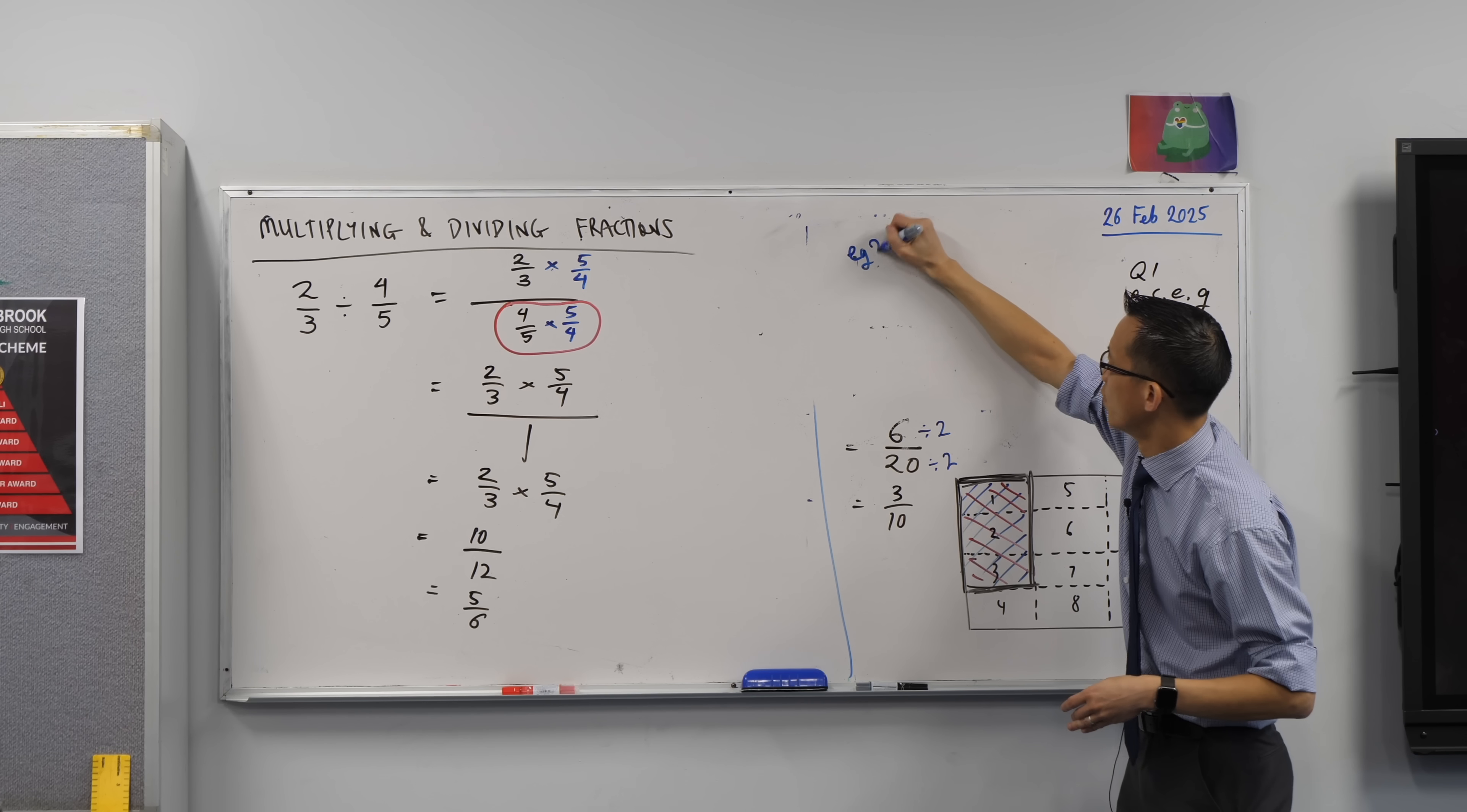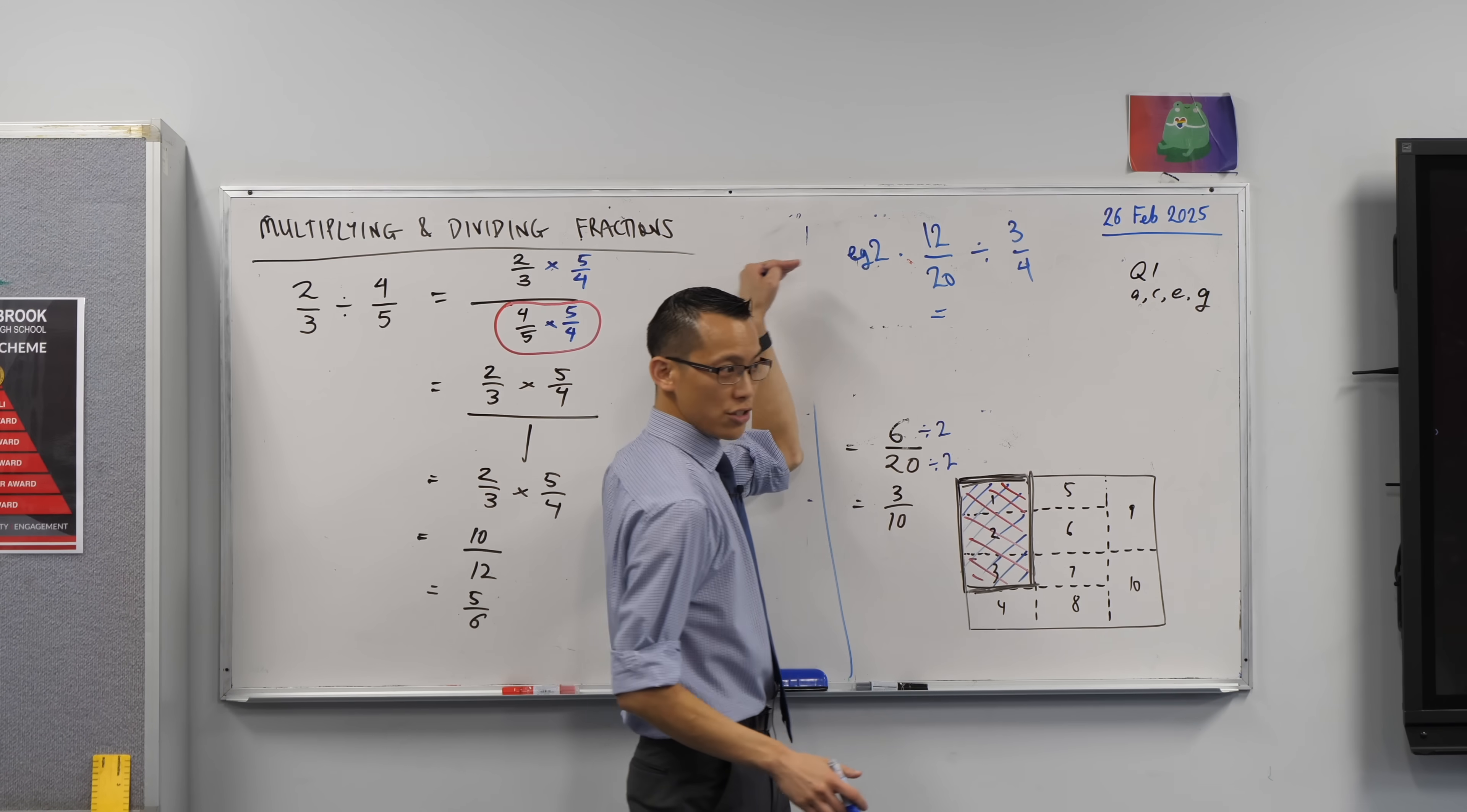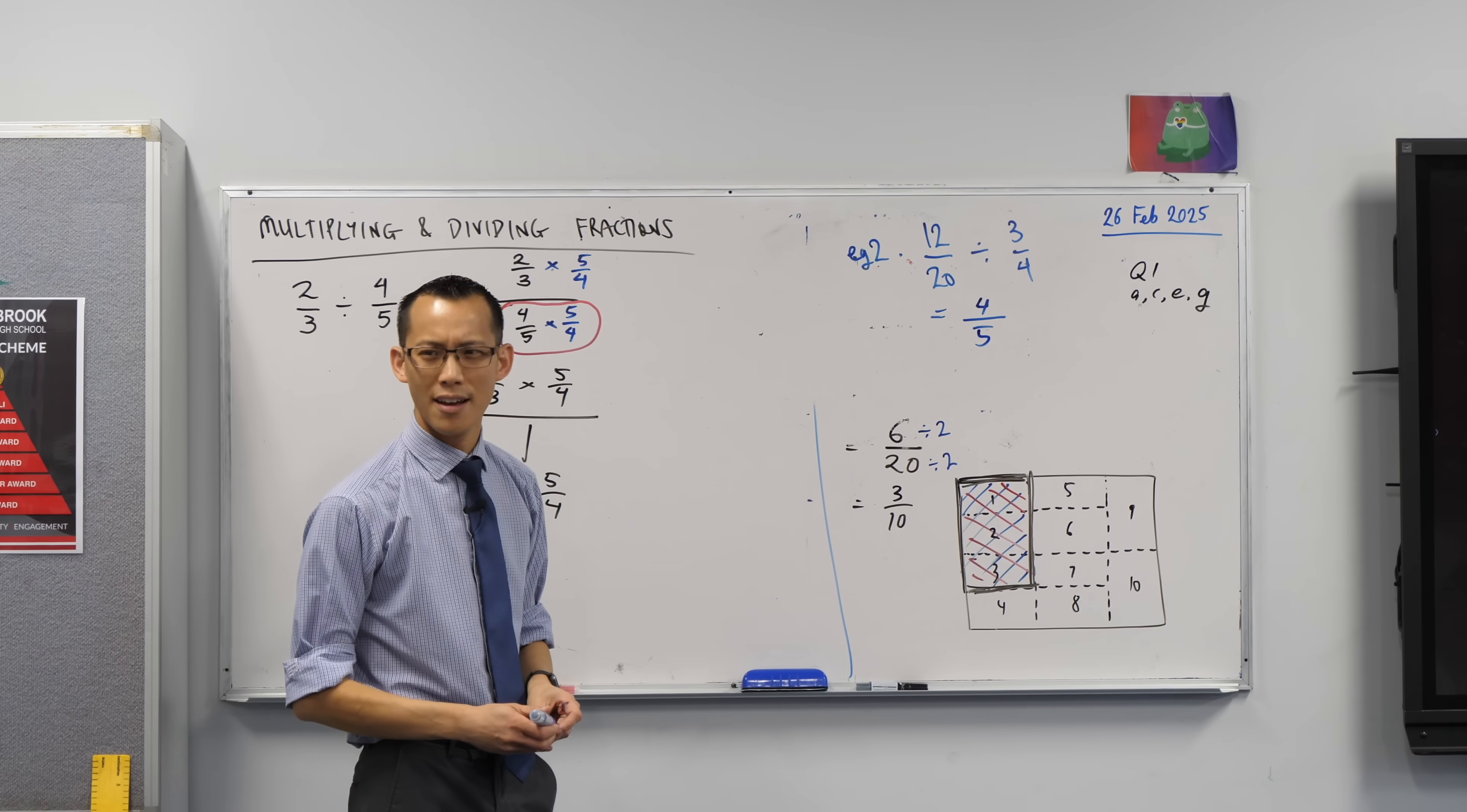Maybe just write this underneath for me. Let's call this example 2. If you had something like 12 over 20 and then I told you to divide it by say 3 quarters. You can do the keep change flip thing if you want. We've just shown that it works but you don't even need to. Just like with multiplication you do the top and the bottom. Division's like multiplication just kind of backwards. So what's 12 divided by 3? It's 4. And what's 20 divided by 4? It's 5. And if you keep change flip you'll get this too. It's just that this way is actually a bit simpler and faster.